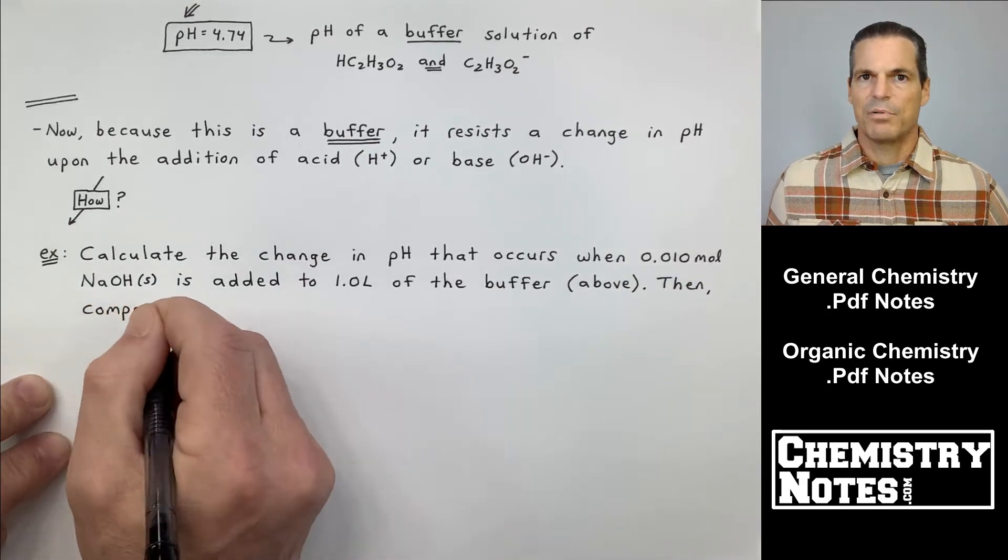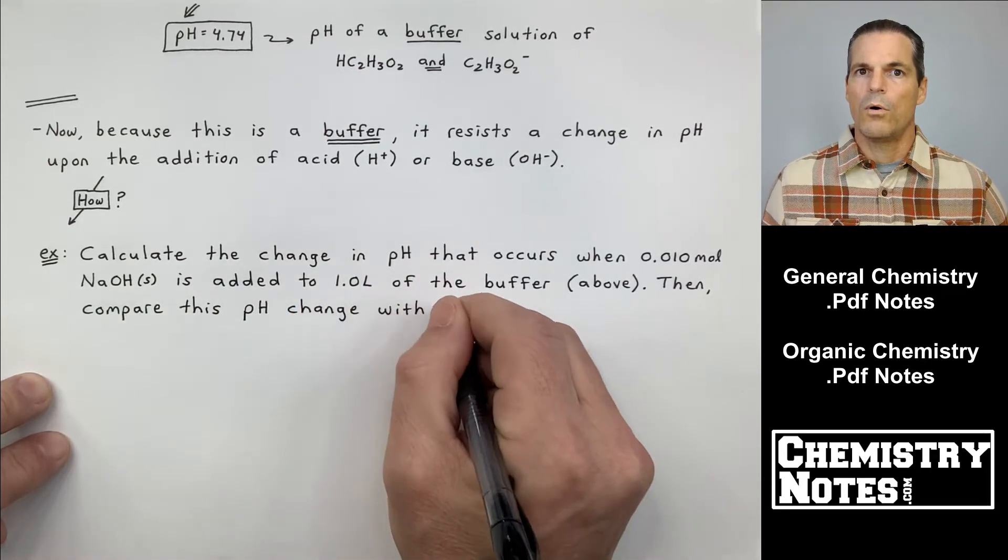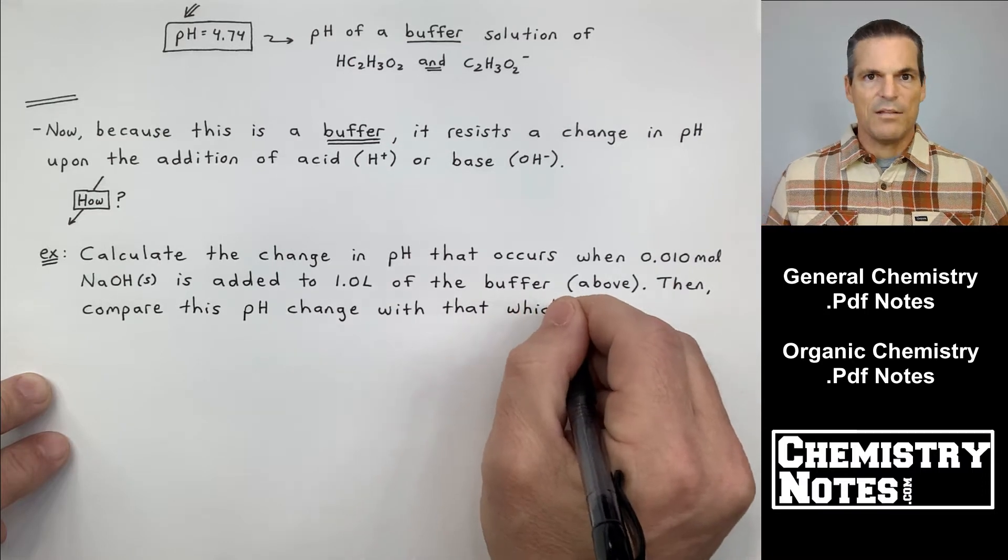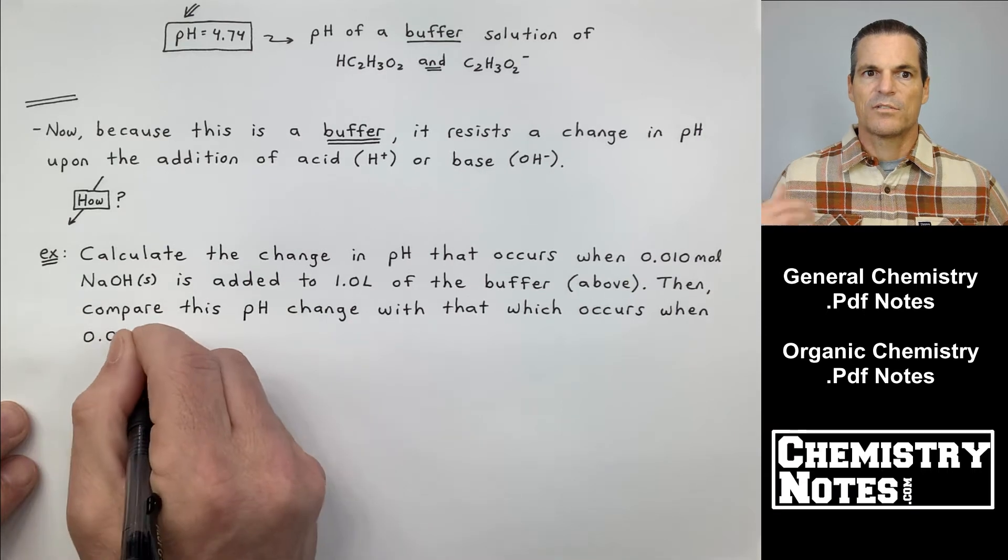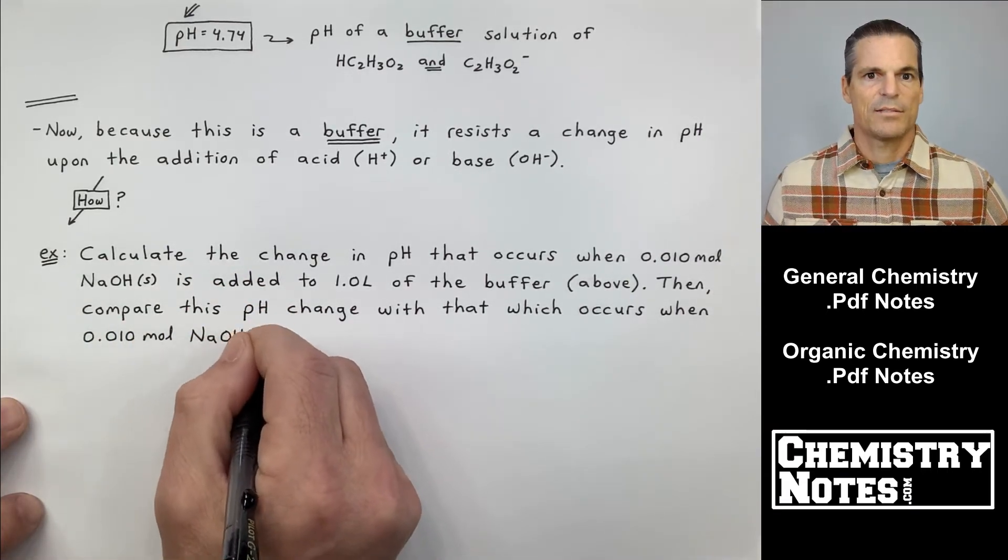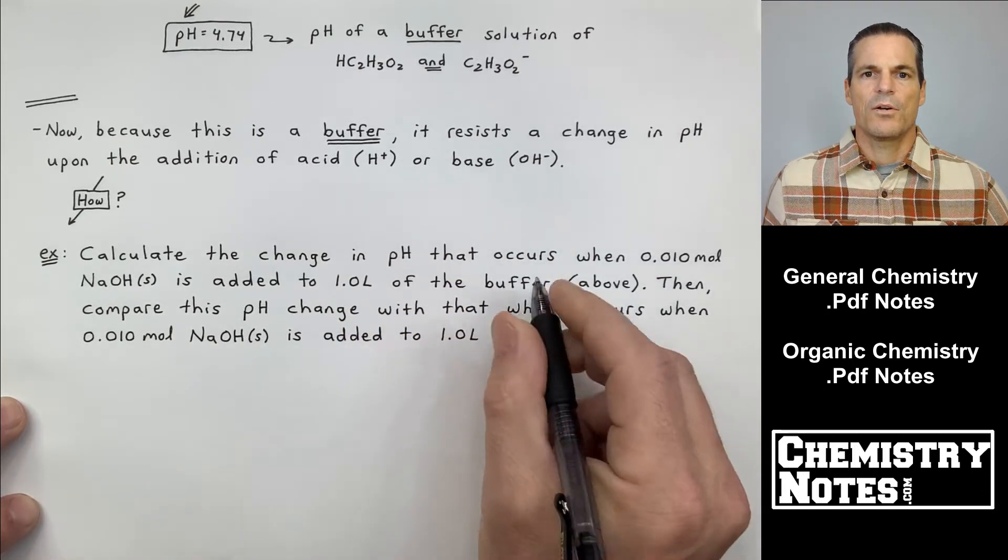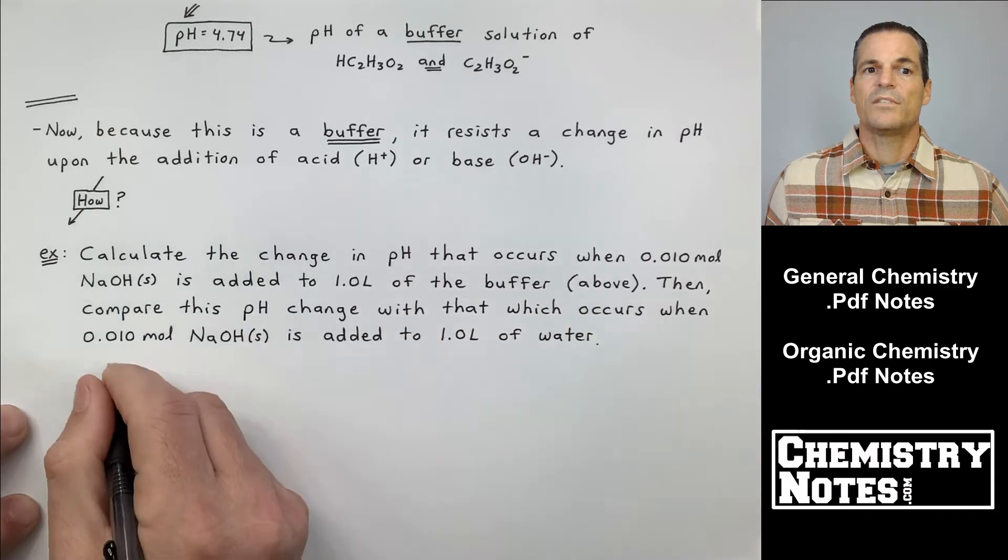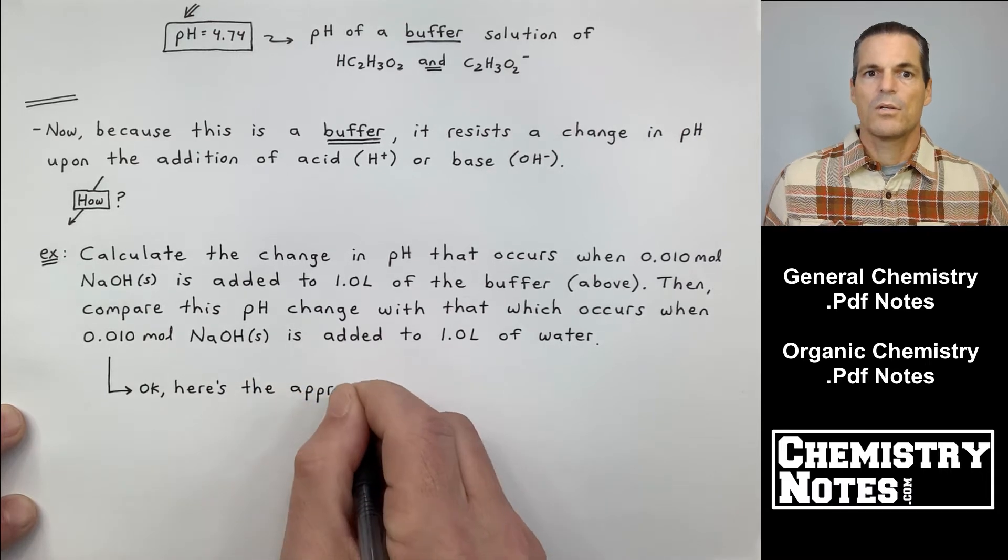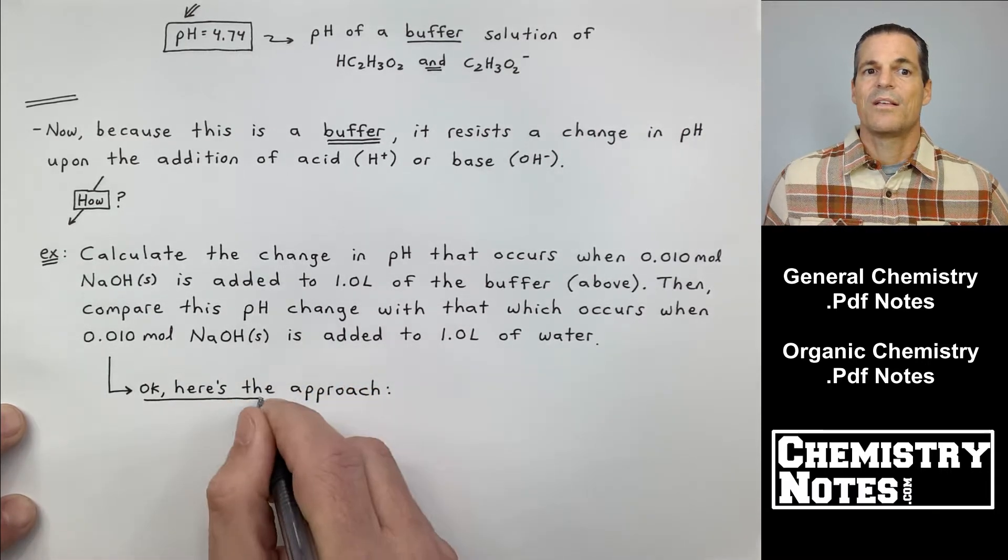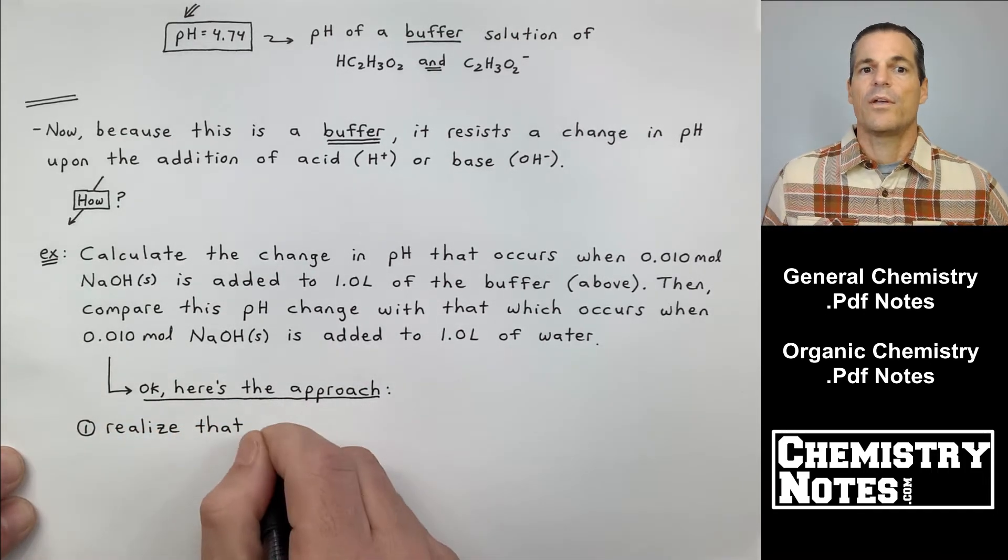And OH-, the OH- is 0.010 moles. If that would remain OH- the whole time that I've added it to my buffer, the pH would skyrocket. So something's happening to the OH-, we want to see what that is. So just let me reread. Calculate the change in pH that occurs when 0.010 moles NaOH is added to a liter of the buffer from above. Then compare this pH change with that which occurs when the same amount of NaOH were added to just water instead of a buffer. So here's the approach.